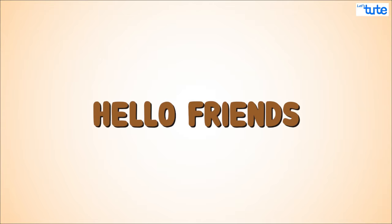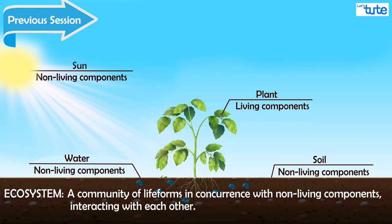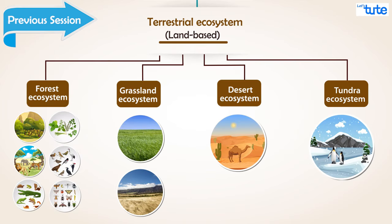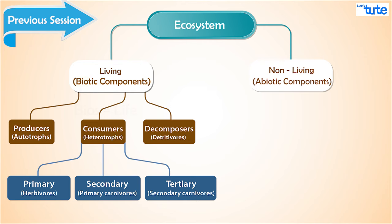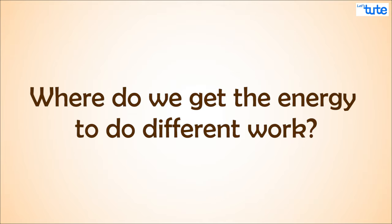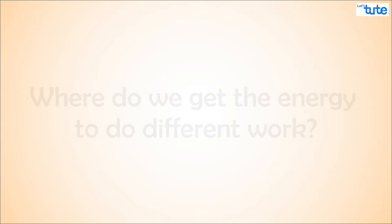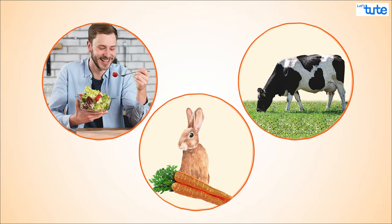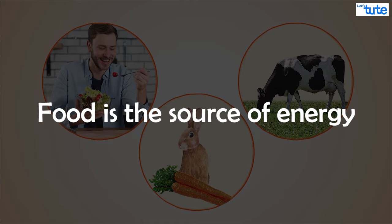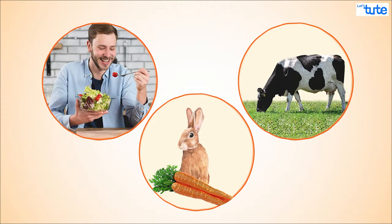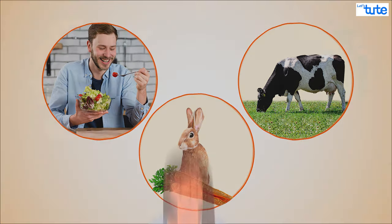Hello friends, welcome to Let's Do It. Previously on Ecosystem, let's continue knowing about the ecosystem. Where do we get the energy to do different work? Yes, it is from the food that we eat. Food is a source of energy for all living organisms, and to obtain this energy they depend on other organisms and plants, and that's how our ecosystem functions.